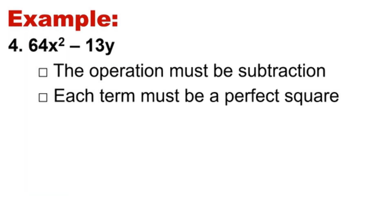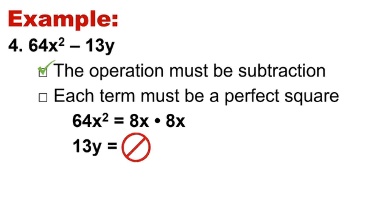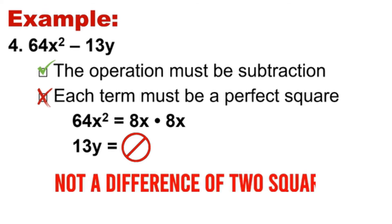Another one: 64x squared minus 13y. Let's check — is the operation a subtraction? Yes, we satisfy the first requirement. Each term must be a perfect square. Is 64x squared a perfect square? Yes — 64x squared is from 8x times 8x. What about the second term, 13y — is 13y a perfect square? No, 13y is not a perfect square because 13 is a prime number. Therefore, it did not satisfy the second requirement, meaning the given polynomial is not a difference of two squares and we cannot apply the pattern.